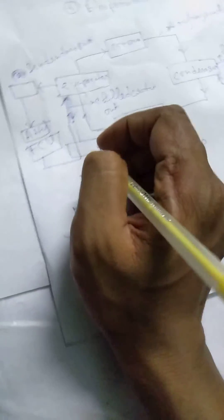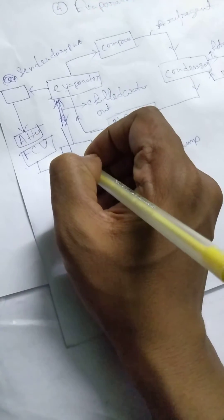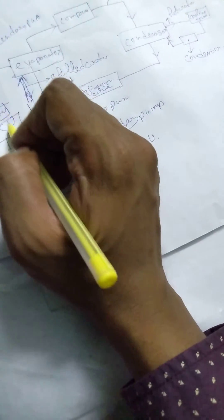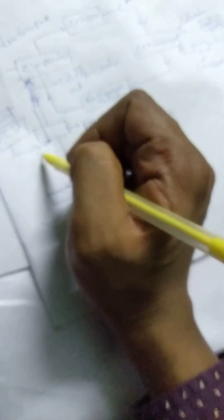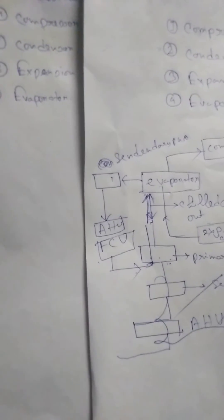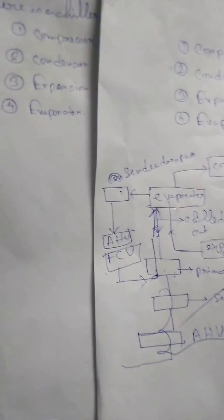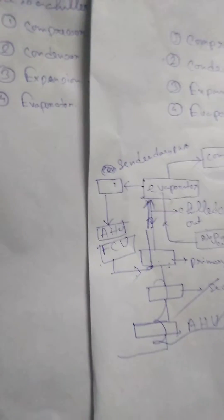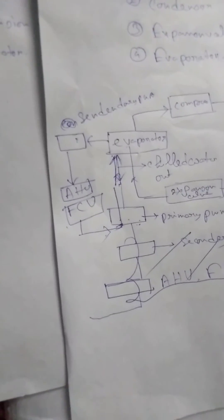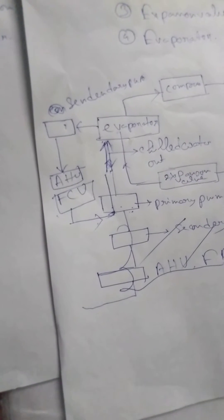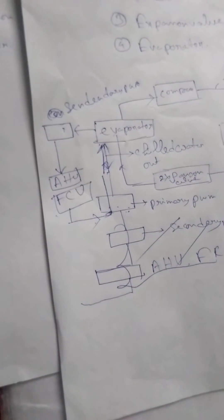It goes back to primary pump. That's the cycle: evaporator to secondary pump, secondary pump to AHU, and AHU to primary pump. This is a block diagram of HVAC. It's just a simple block diagram. I'm discussing more about this in my next video.